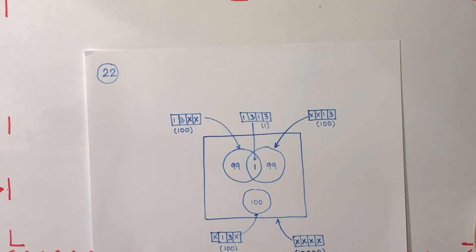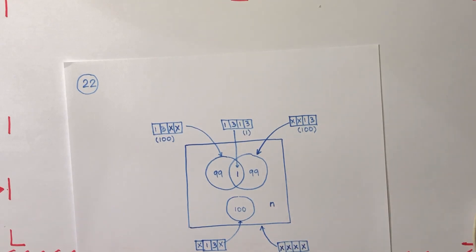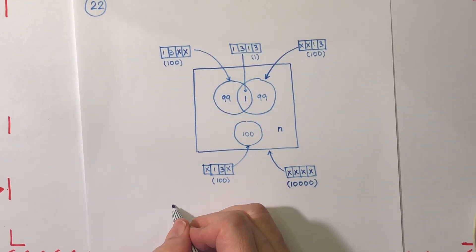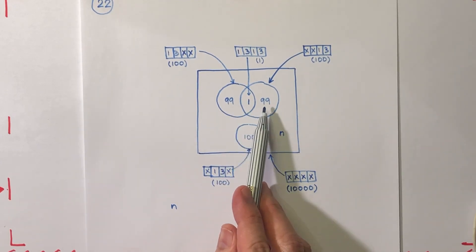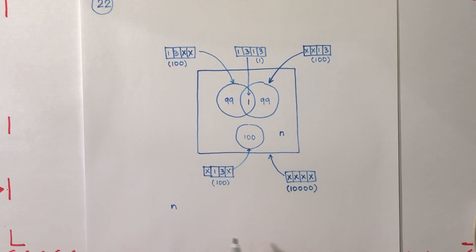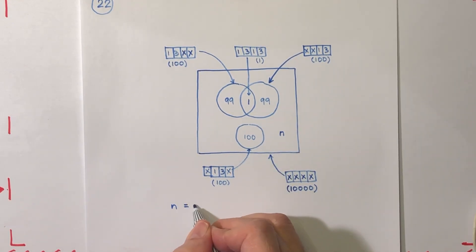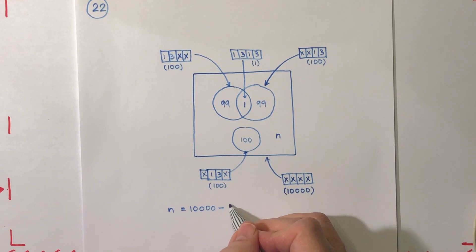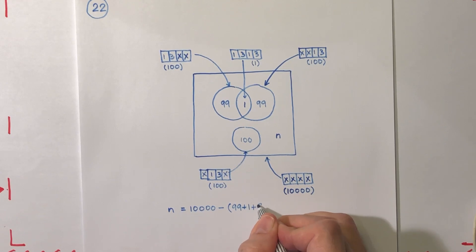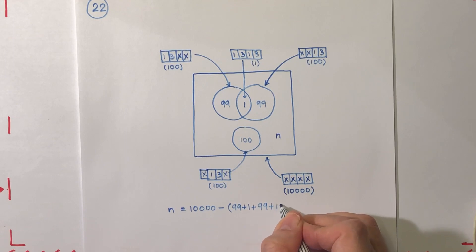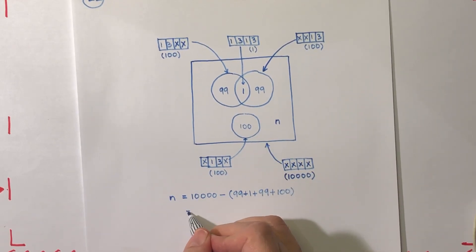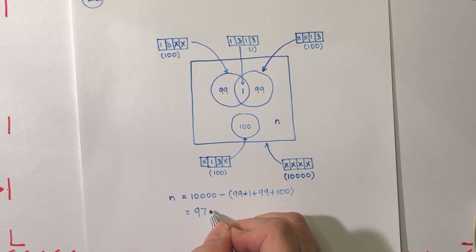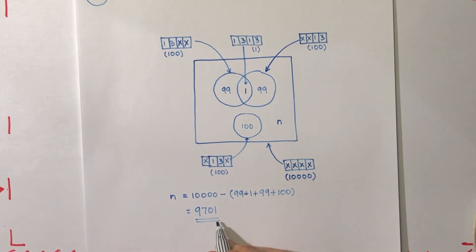Now we calculate how many four-digit numbers do not have 1 followed by 3. Let's call this number N. Since all combinations must add up to 10,000, N is simply 10,000 minus everything in the not-allowed sets: minus 99, plus 1, plus 99, plus 100. The answer is 9,701. That is the answer for question 22.